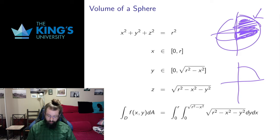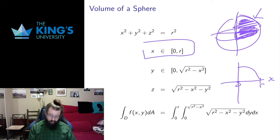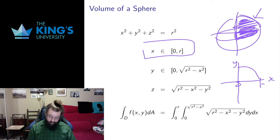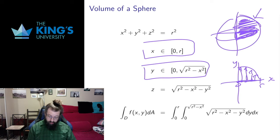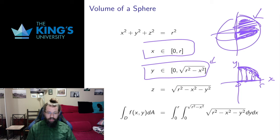I'm going to use variable bounds. The x-axis will go from 0 to r — those are my outside constant bounds. In the y-direction I go from 0 up to the arc of the circle. That circle is x² + y² = r², so solving for y in the positive quadrant gives y = √(r² − x²). So the bounds for y are from 0 to √(r² − x²), which are inside the x-integral and depend on x.